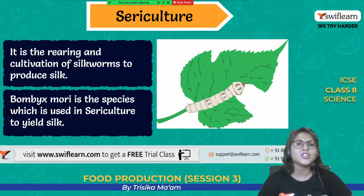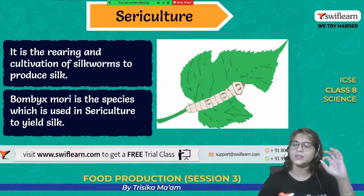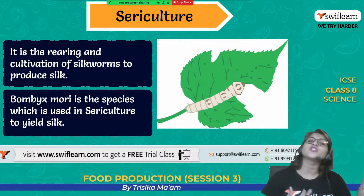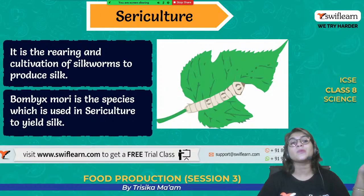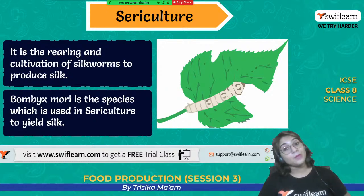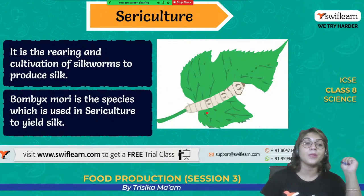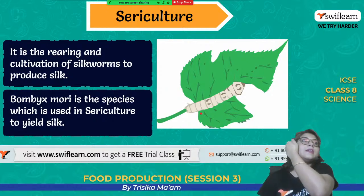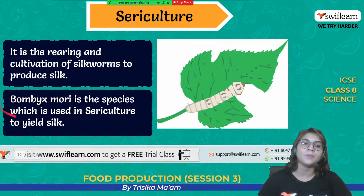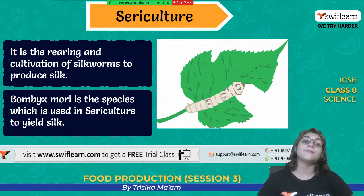Sericulture is the rearing and cultivation of silk from silkworm — rearing of silkworm to get more and more silk. The different types of silk are broadly divided into four main categories: mulberry silk (very expensive), tasar silk (also expensive), eri, and muga. The Indian silkworm's scientific name is Bombyx mori, and it is a species of silkworm from which we get a good yield of silk.